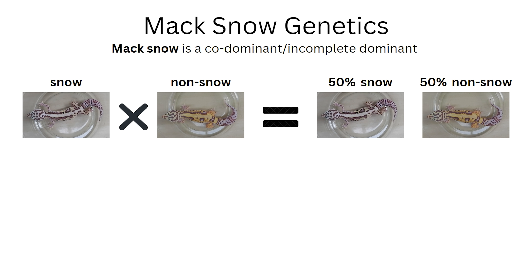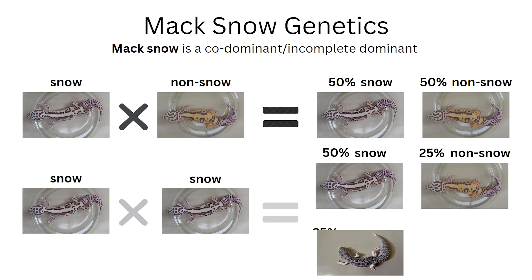So what's the difference with codominant? Codominant has a superform. If the parents are both snows, 50% of the offspring are snows, 25% are non-snow, and you can produce a superform. A superform is when they got two copies of the gene.